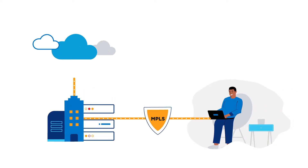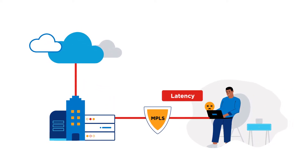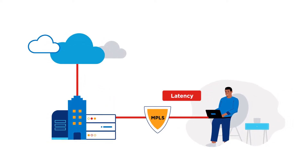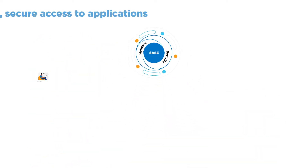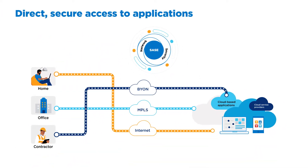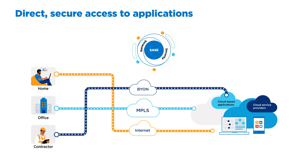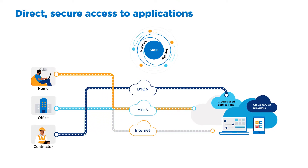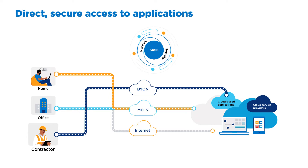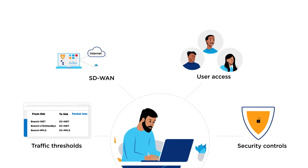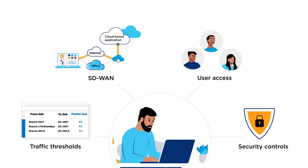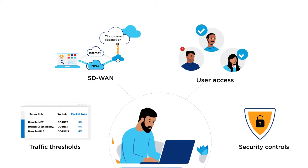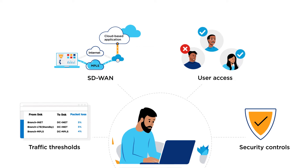Perimeter-based security was not built to meet the demands of today's dynamic cloud-first reality. With SASE, IT teams can transform their WAN to provide direct, secure access to applications and services across a multi-cloud environment, regardless of location or device. And with a SASE-enabled SD-WAN, you can ensure consistent policy enforcement and streamlined access control for users, devices, and applications.